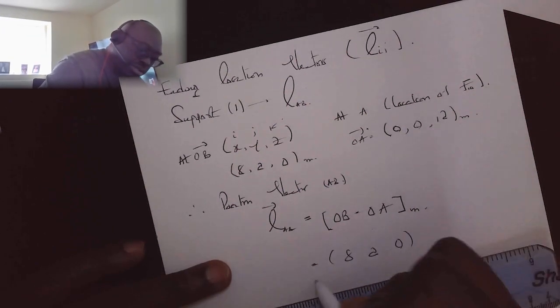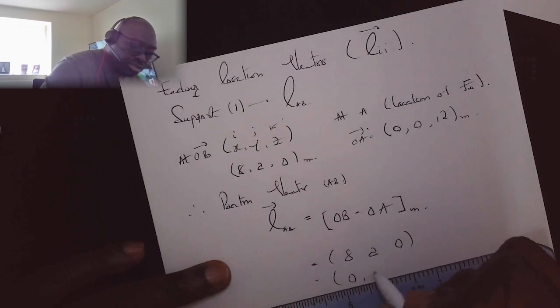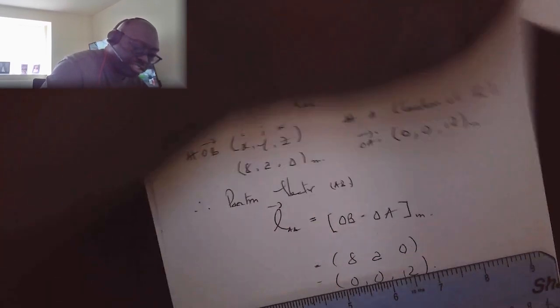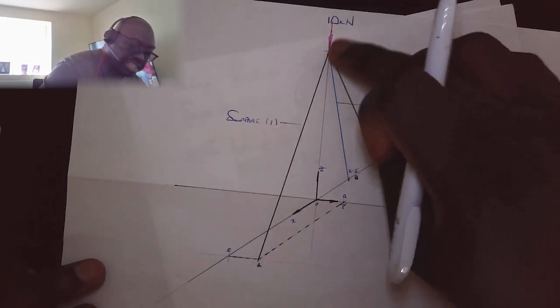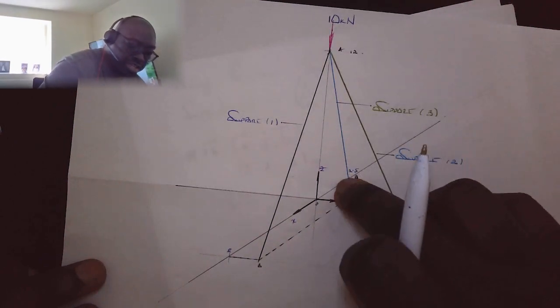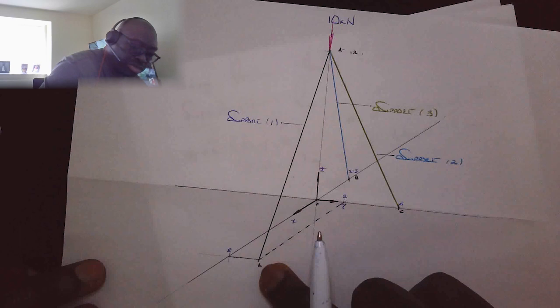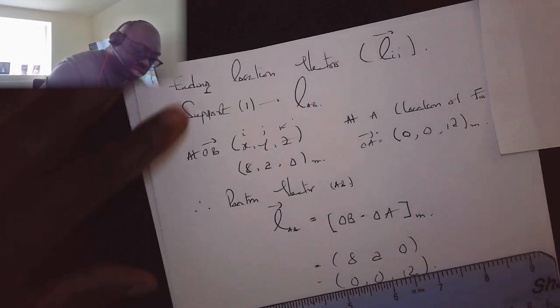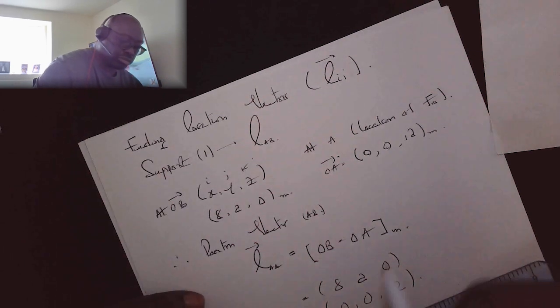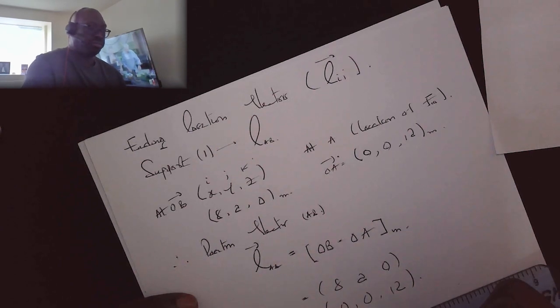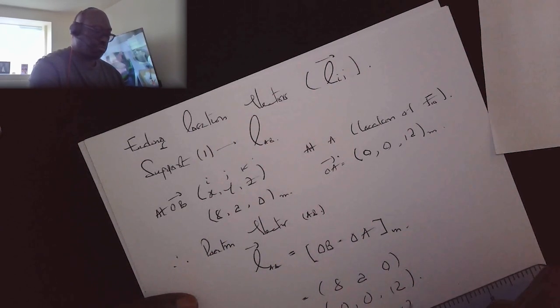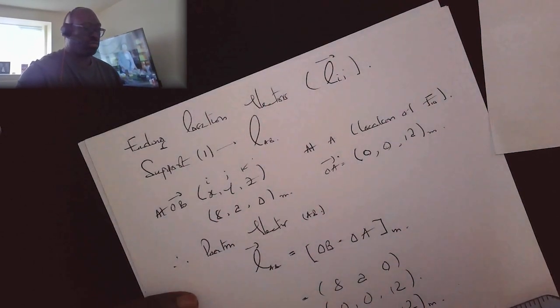That's equal to eight, two, minus twelve. Or let's define that as eight i plus two j minus twelve k. So we've got 12, eight, two. So we've defined one of the vectors.